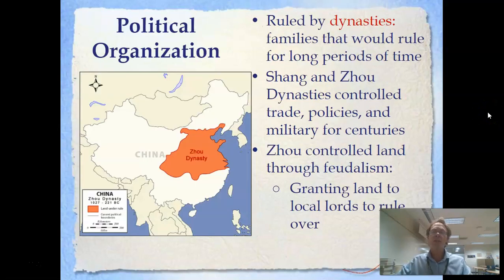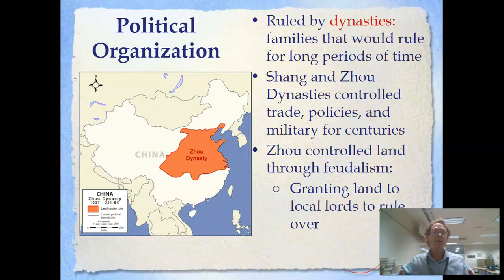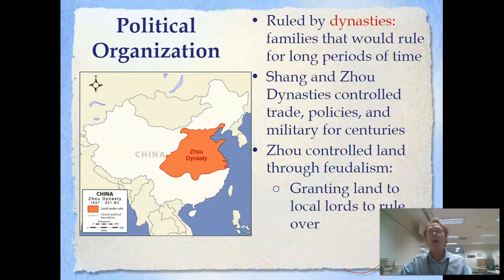In terms of political organization, China looks a lot more like Egypt than Mesopotamia. China was ruled for hundreds, if not thousands, of years by dynasties — families who ruled for long periods and handed power from one family member to the next. These king-like figures are quickly called emperors because they rule over many different territories. At this point in time, we have the Shang dynasty and the Zhou dynasty, controlling trade, governmental policies, and the military for centuries.